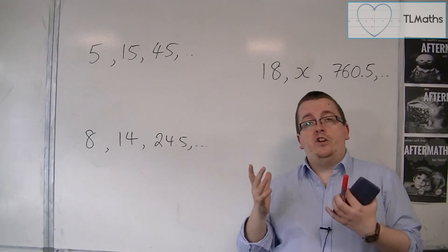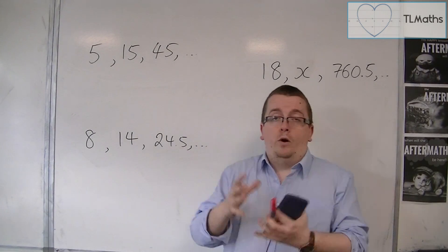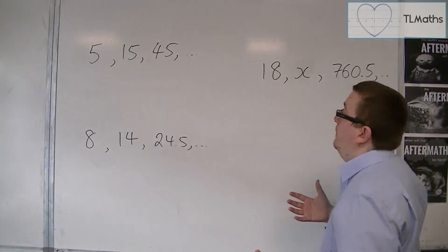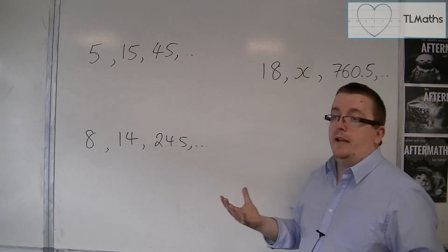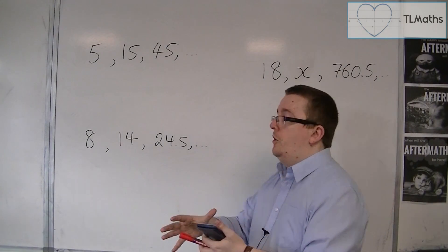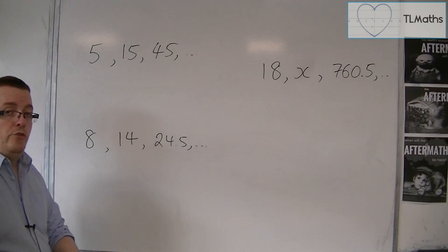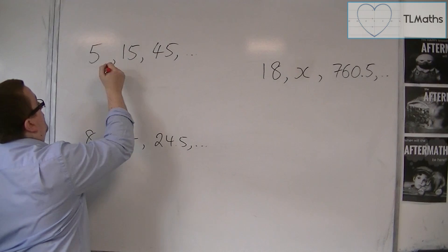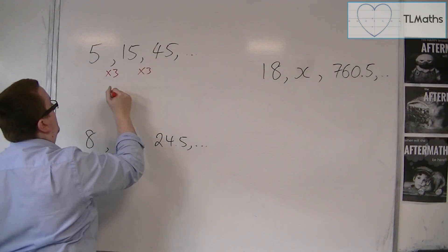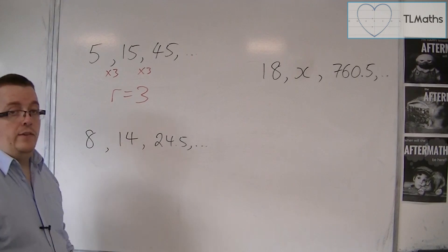Now sometimes the common ratio will be obvious. So you'll be able to tell immediately from looking at the sequence that is the common ratio, because in this case you can see that we are multiplying by 3 each time. So the fact that I'm multiplying by 3 each time means that r is equal to 3 in this case.